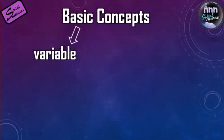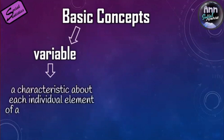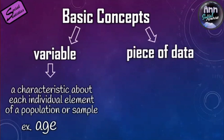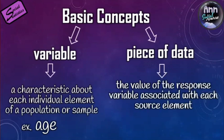A variable is a characteristic about each individual element of a population or sample — something that varies from one person to another, like age. A piece of data pertains to the value of the response variable associated with each source element. For example, for the variable 'age,' the piece of data could be '83 years old.'